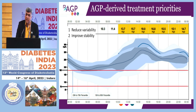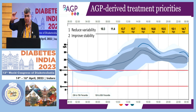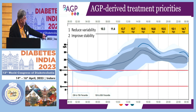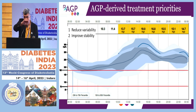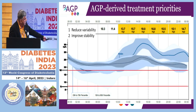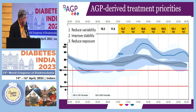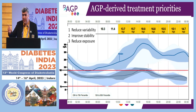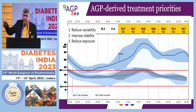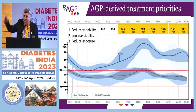Stability refers to intraday variability — how much things change within the day. You want to reduce the breadth of the AGP, which is reducing interday variability. Then you want to improve stability — make the median line flatter, even if it remains high. Only once you've reduced variability and improved stability should you then reduce the exposure — increase the dose of insulin or other medication to bring sugars down. If you try to reduce sugars without first changing variability and improving stability, you land up with more hypoglycemia. The time in range may improve, but the time below range worsens.